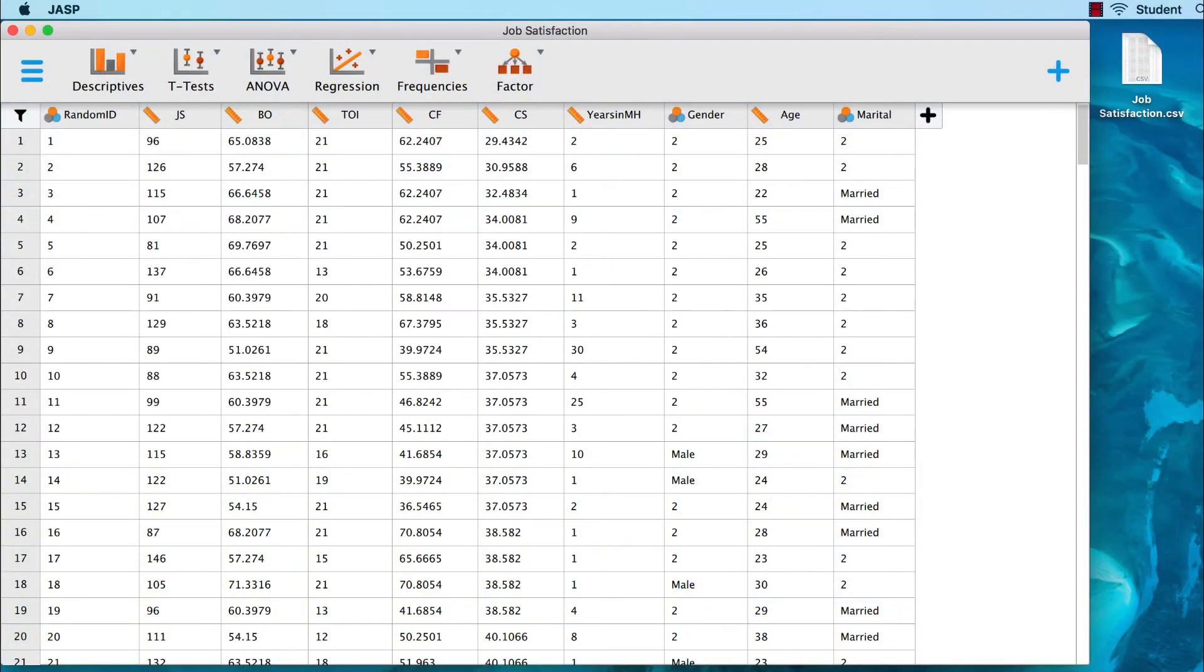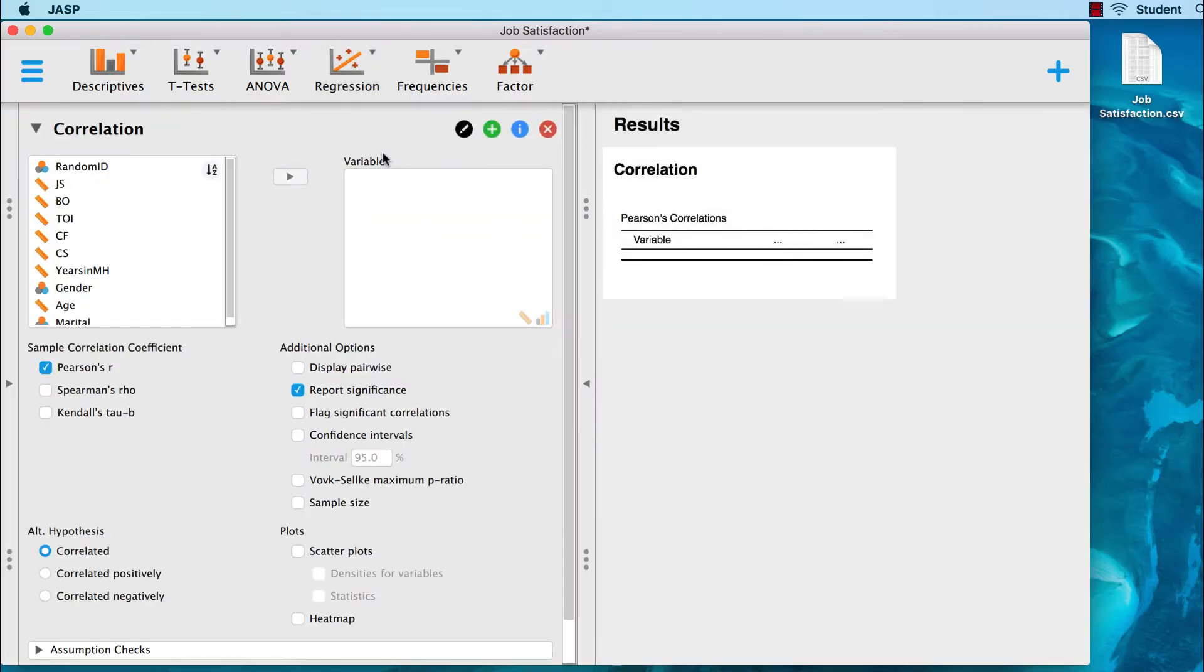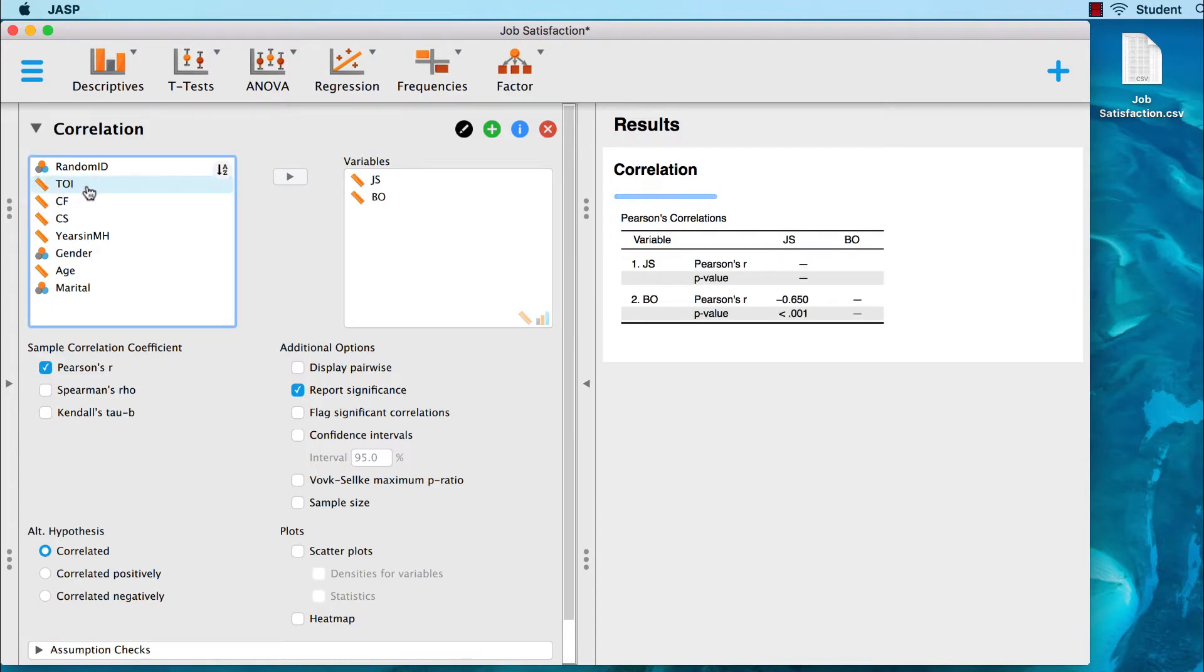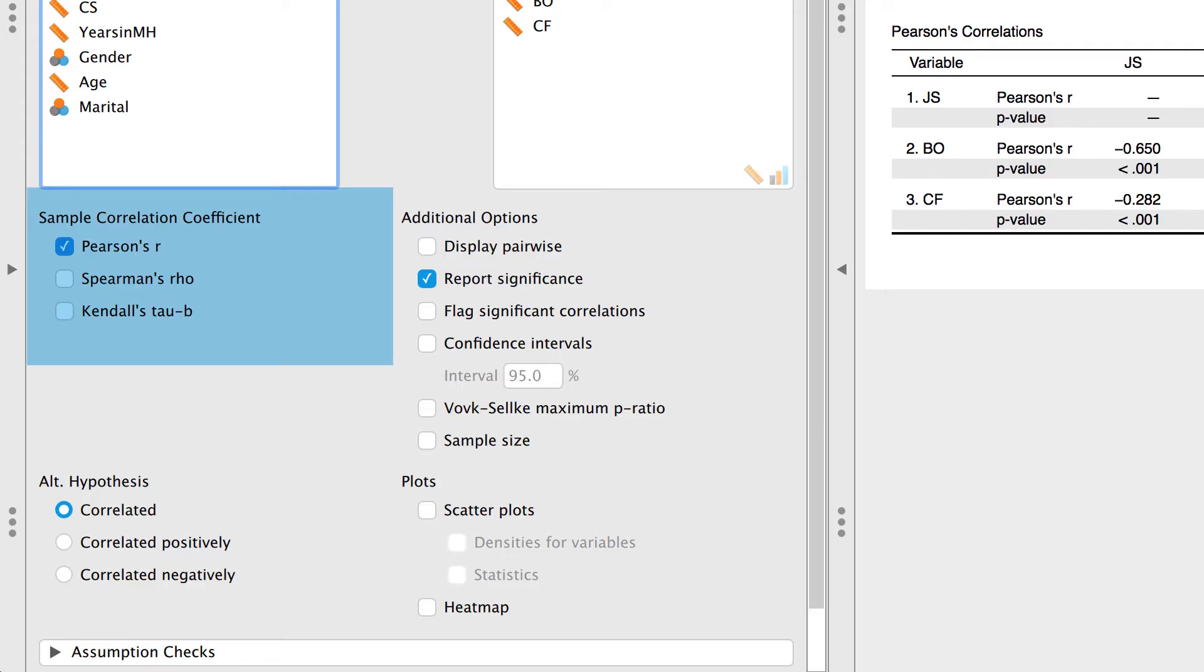To do a Pearson's correlation, begin by clicking on Regression, and then under Classical, choose Correlation. Remember that correlation is a special case of regression, and that both are part of the General Linear Model, in which we model our data using a straight line. This is why correlation can be found under Regression. Move the variables job satisfaction, burnout, and compassion fatigue into the variables window.